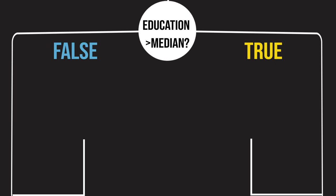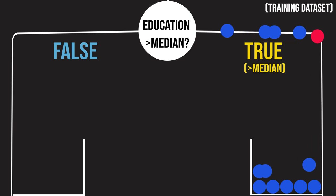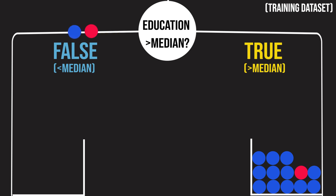Let's see what happens when we split the tree at each of our three x variables one by one. When we split on education, we see that the true branch, which contains states with education above the median, has mostly blue states and one red state. The false branch, or states with education below the median, contains mostly red states and a few blue ones.